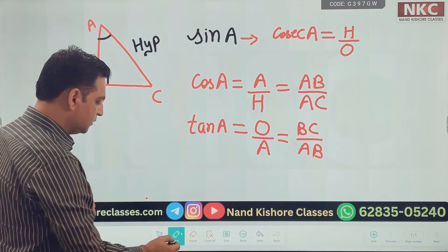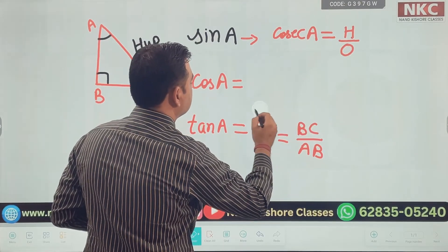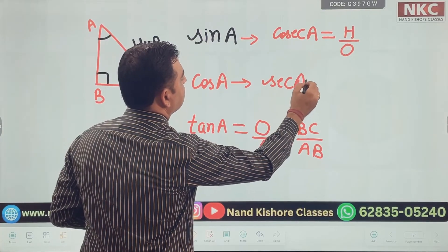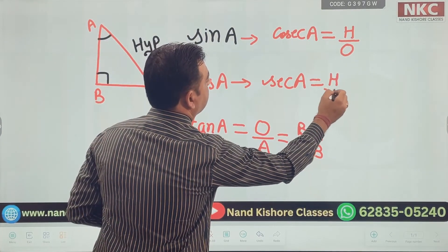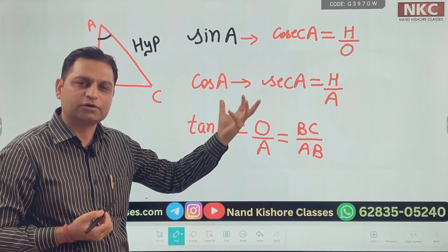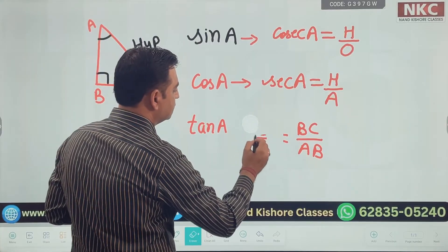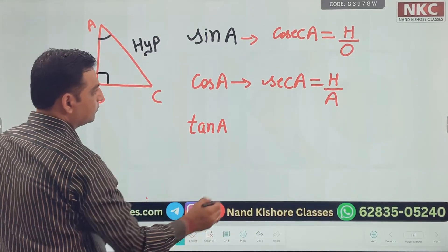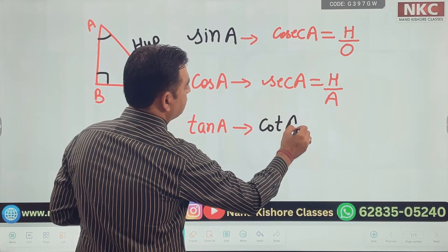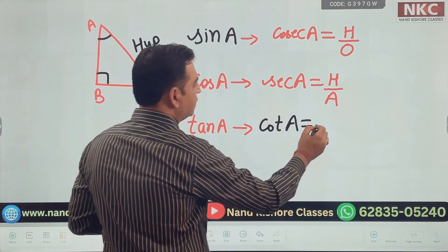And for cos, if we check for cos, its reciprocal is secant. And how would we write it? Secant A is H over A. Because cos was adjacent over hypotenuse. This is hypotenuse over adjacent. And at the end, if you see tangent, its reciprocal is cotangent A. Now, tangent was opposite over adjacent. So, it is adjacent over opposite.